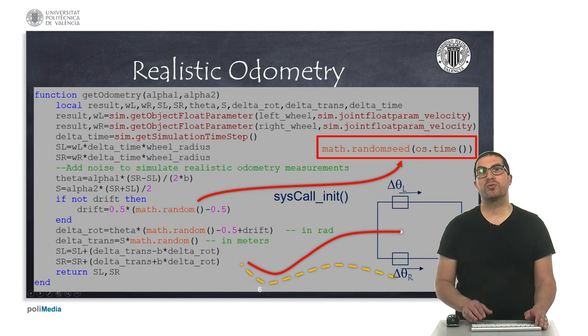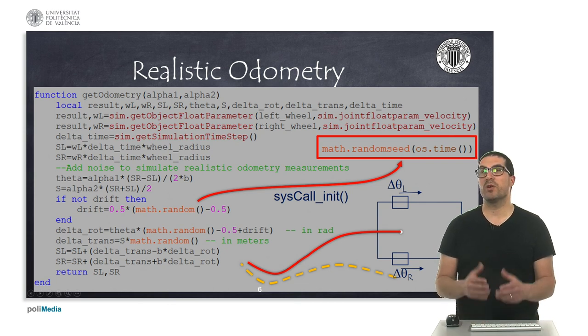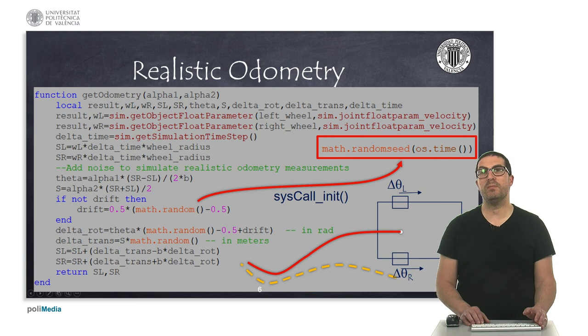Therefore, we encourage you to extend the previous function to include two input arguments, in this case representing magnitude of the angular rotation and linear translation noises applied to the odometry system respectively. So it means that alpha 1 affects the rotation and alpha 2 affects the translation.